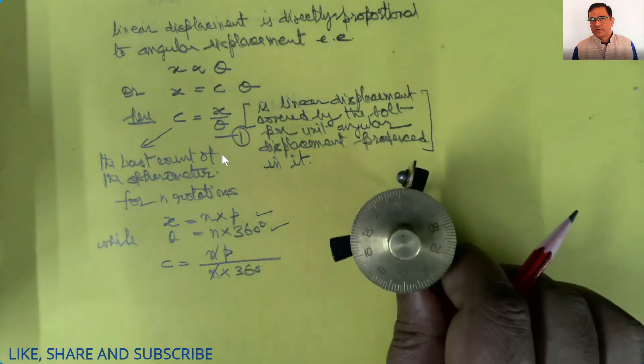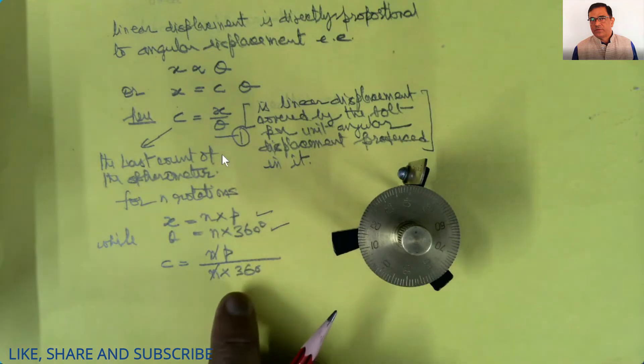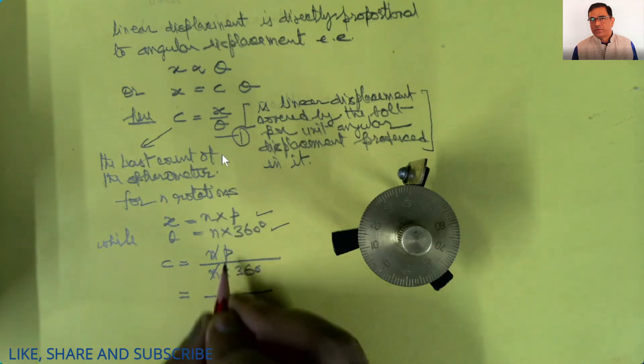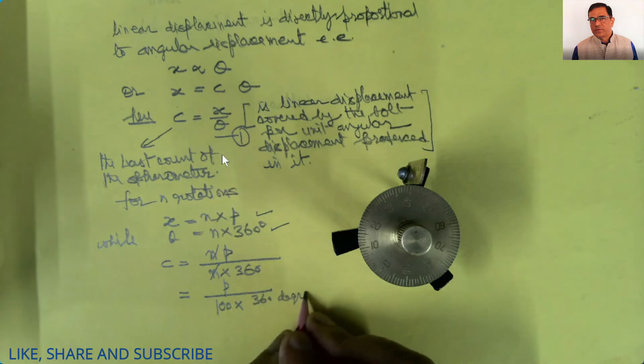The circular scale of this spherometer has 100 divisions, and that is why this relation can be rewritten as c equals p upon 100 multiplied by 360 degrees upon 100.